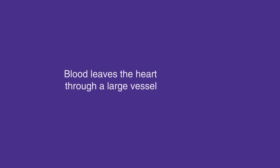Valves between each chamber prevent reverse blood flow. Blood leaves the heart through a large vessel called the aorta. The two atria contract simultaneously, as do the ventricles, making the contractions of the heart go from top to bottom.